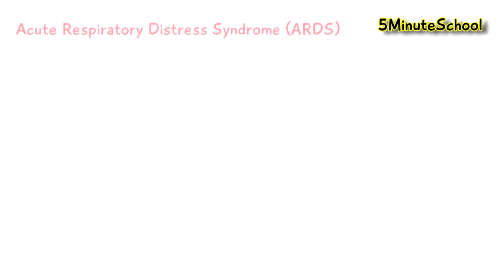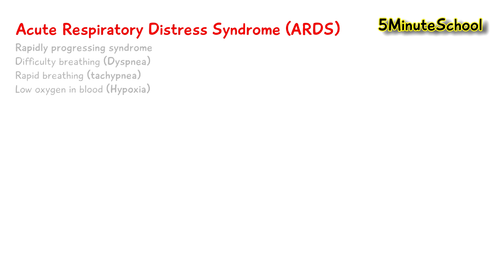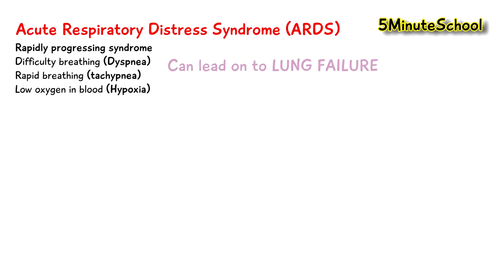Welcome to 5-Minute School. In this video we're going to be talking about Acute Respiratory Distress Syndrome. This is a rapidly progressive disorder that starts off with difficulty breathing, rapid breathing, and low oxygen levels in the blood, and it eventually leads on to respiratory lung failure.